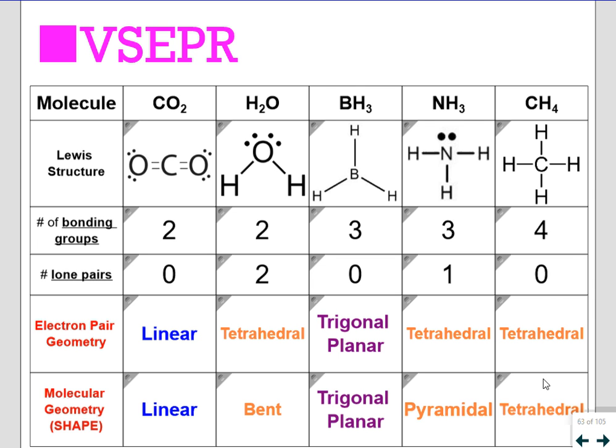As far as things with five and six electron pair domains, we will be drawing Lewis structures. We might ask you how many electron pairs are around the central atom, but we won't ask you the specific names of all the shapes.